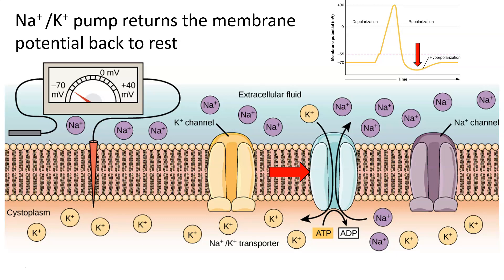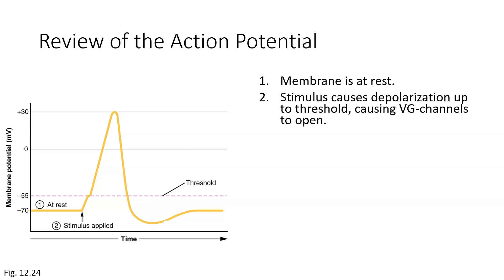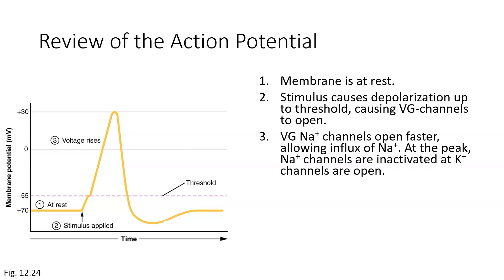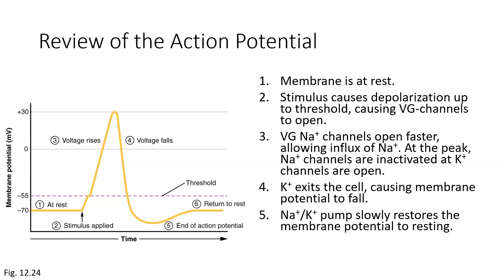That was a lot. Let's review the sequence of events during an action potential. First, the membrane is at rest. Next, an incoming signal causes the membrane to depolarize. When depolarization reaches the threshold value, voltage-gated ion channels open. Because voltage-gated sodium channels open faster, sodium enters the cell first, causing depolarization. At the peak, sodium ion channels are deactivated and potassium ion channels open. Potassium ions rush out of the cell, causing repolarization, followed by hyperpolarization as the membrane potential overshoots due to slow-closing potassium channels. Lastly, the sodium-potassium pump slowly restores the membrane back to its resting potential.